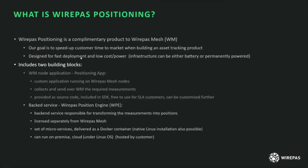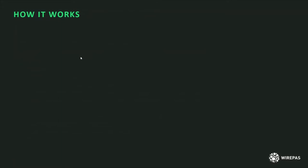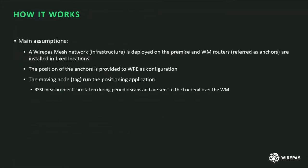The next question is how it works. There are a few main assumptions. First, you deploy a Wirepass mesh network infrastructure on-premise, and that infrastructure will contain routers — which in the context of positioning we call anchors — installed in fixed locations, so the routers are not moving around. You also have to provide the positions of the routers or anchors to the WPE as a configuration.